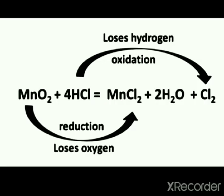The reaction given is MnO₂ + HCl → MnCl₂ + H₂O + Cl₂. Identify the substance undergoing oxidation, reduction, as well as the oxidizing agent and reducing agent. MnO₂ changes to MnCl₂ — here MnO₂ loses oxygen, therefore reduction takes place in MnO₂. Since MnO₂ undergoes reduction, it will act as an oxidizing agent. Now HCl changes to products — HCl loses hydrogen, and loss of hydrogen is oxidation. Therefore HCl undergoes oxidation and will act as a reducing agent.